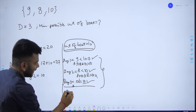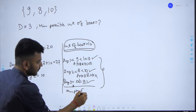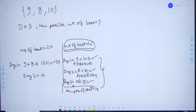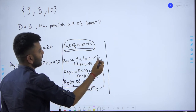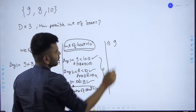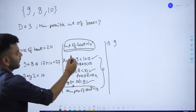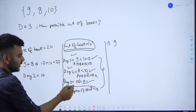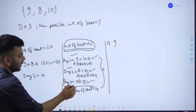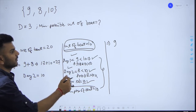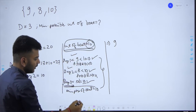Our minimum possible weight of the boat is 10. To further verify: if we set the minimum boat weight to 9, we can transfer package 1 on day 1 and package 2 on day 2, but on day 3 the third package has weight 10 which exceeds the boat weight of 9. Hence we cannot reduce the boat weight below 10. Therefore, our final answer is 10, and the trick factor of the question is now resolved.